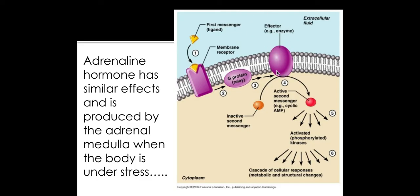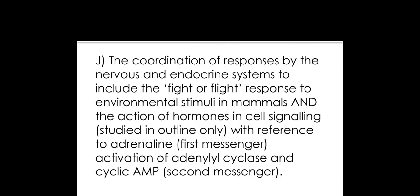The enzyme adenyl cyclase then causes cyclic AMP to form. Cyclic AMP is our secondary messenger, and this second messenger will trigger a response inside the cell which, in the case of hepatocytes being triggered by adrenaline, would be to break down the stores of glycogen into glucose, so that glucose can then be used and taken elsewhere in the body for aerobic respiration to make ATP, normally for muscle contraction. That's everything we need to know about the fight or flight response.